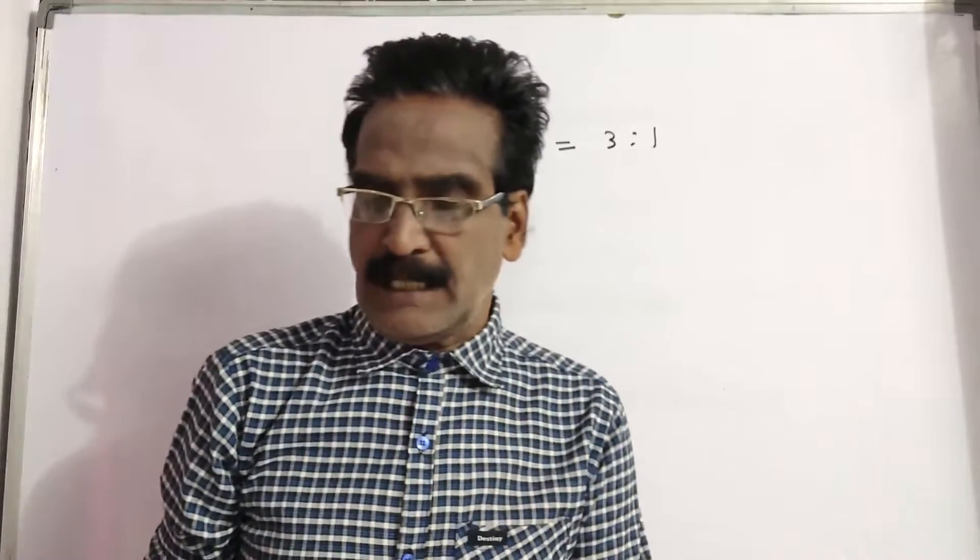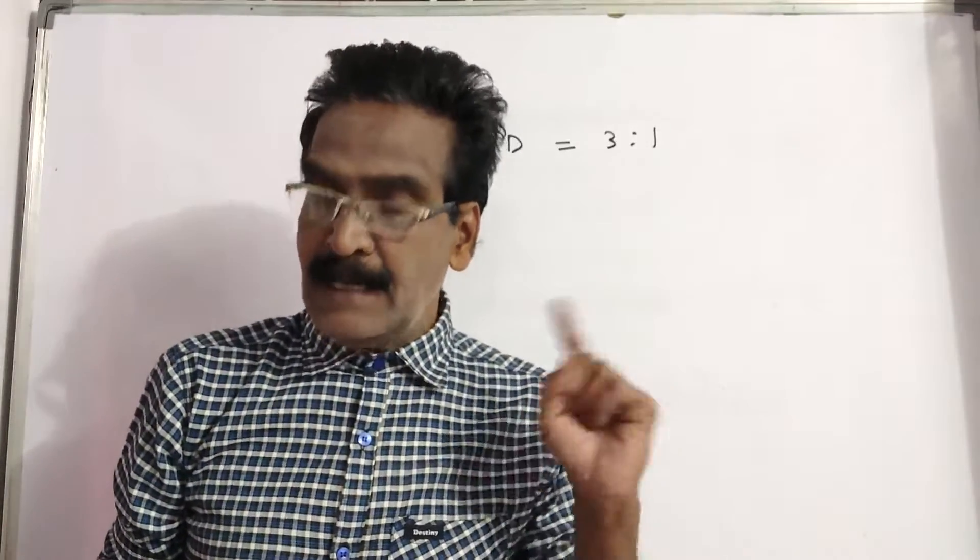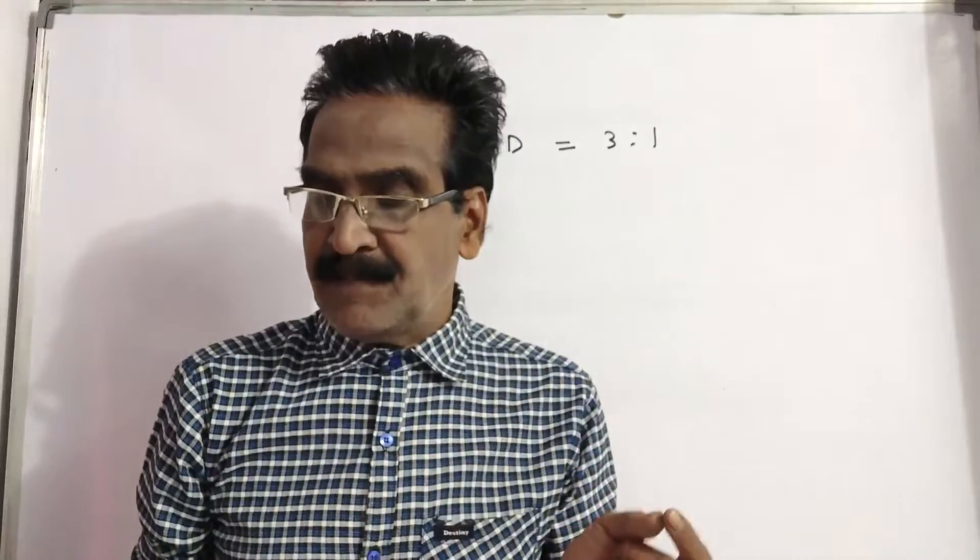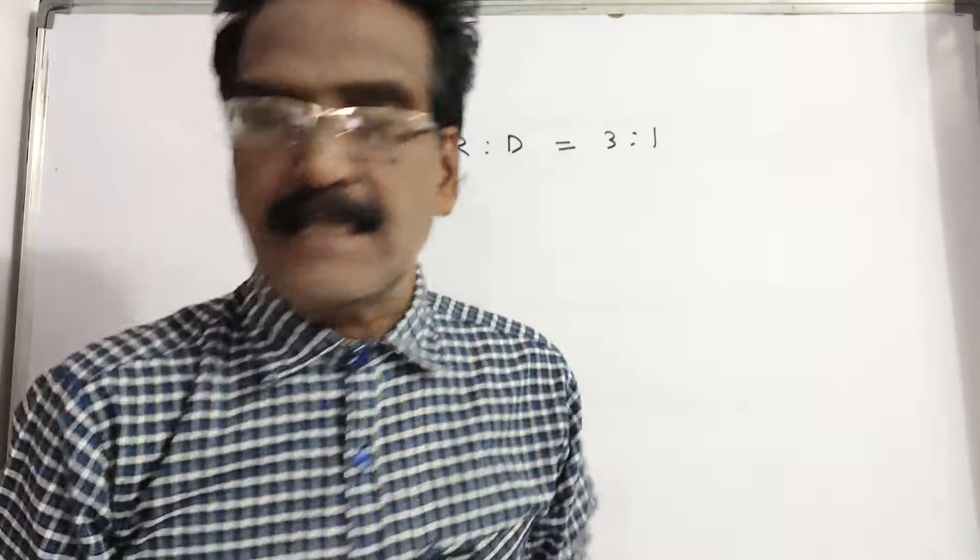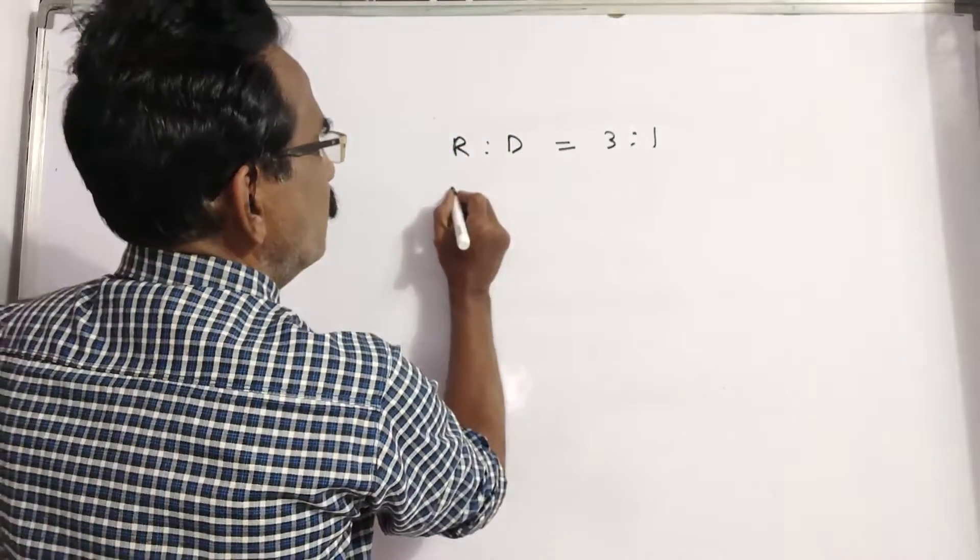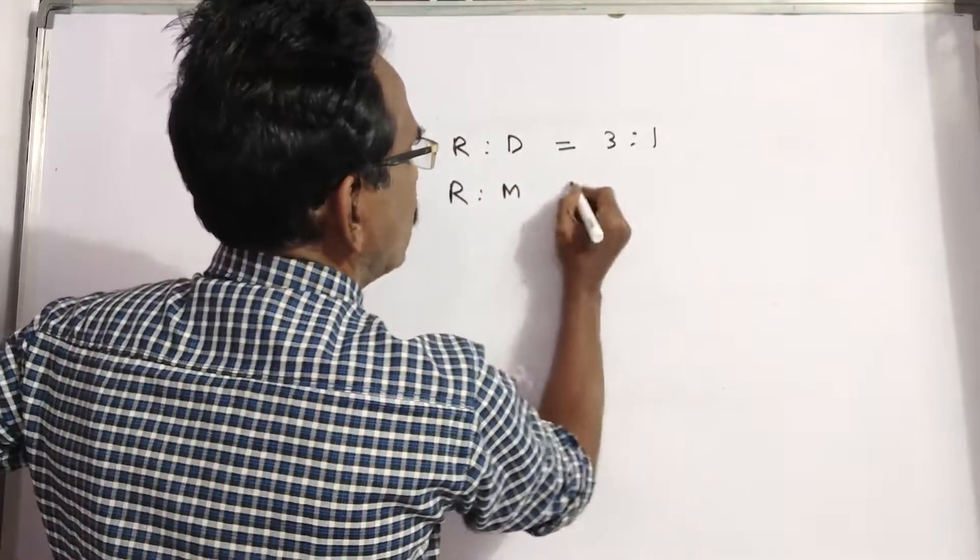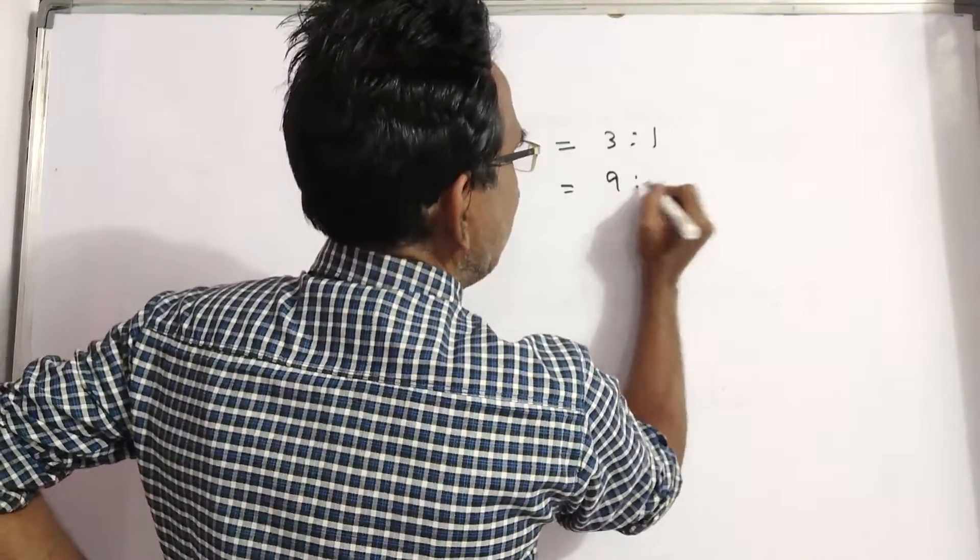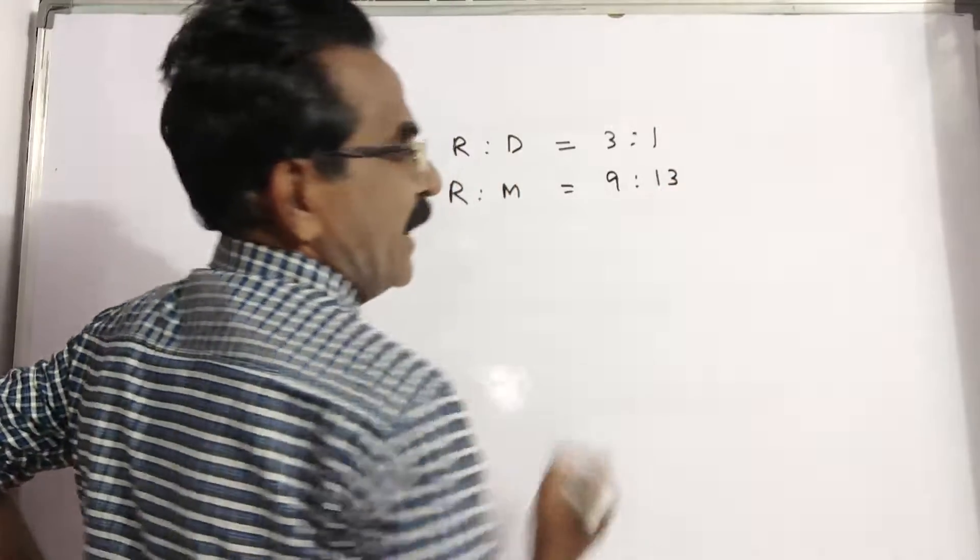Raman is nine thirteenths of his mother's age. So the ratio of Raman and his mother is nine is to thirteen.